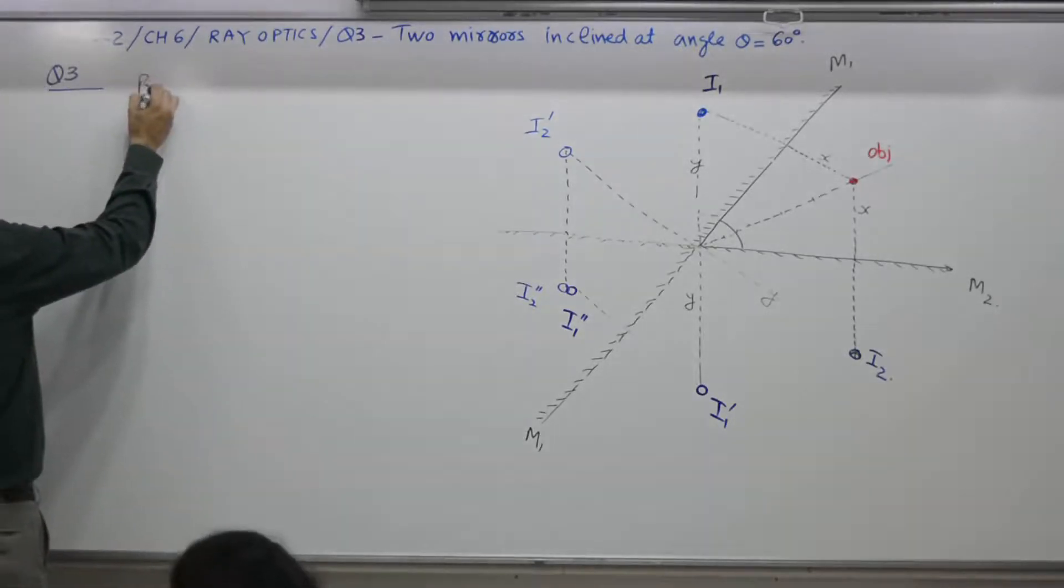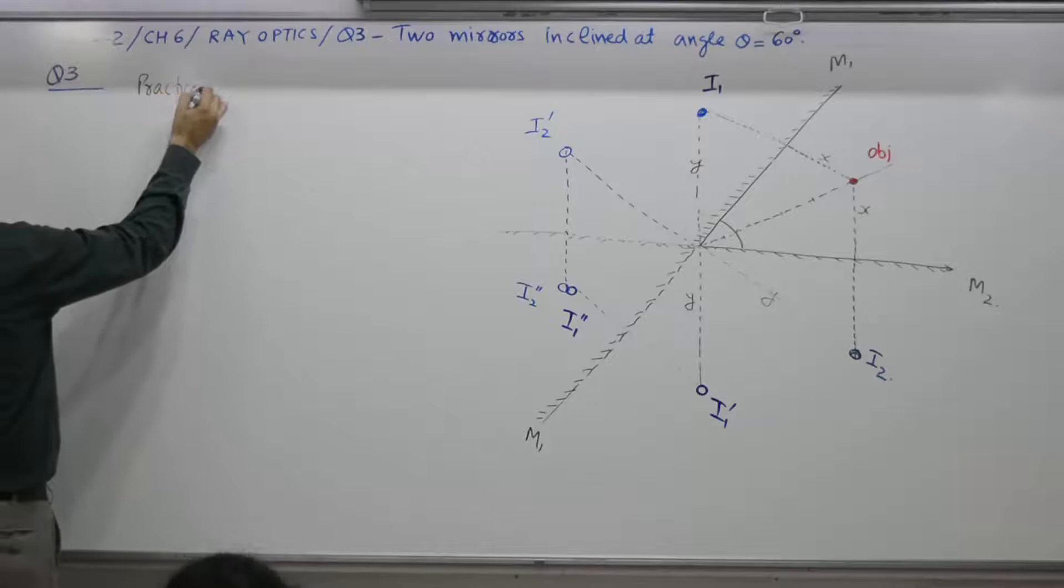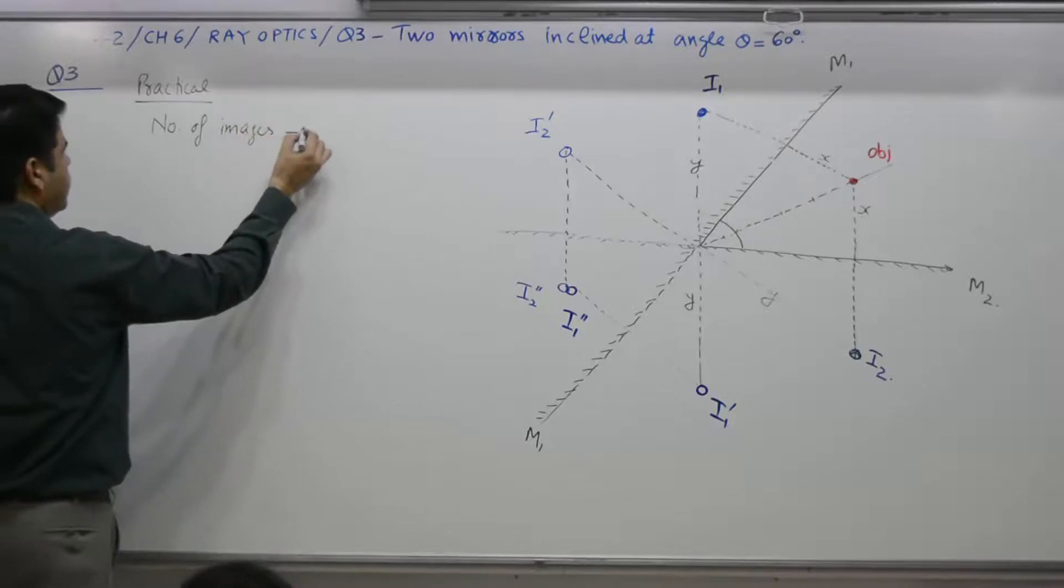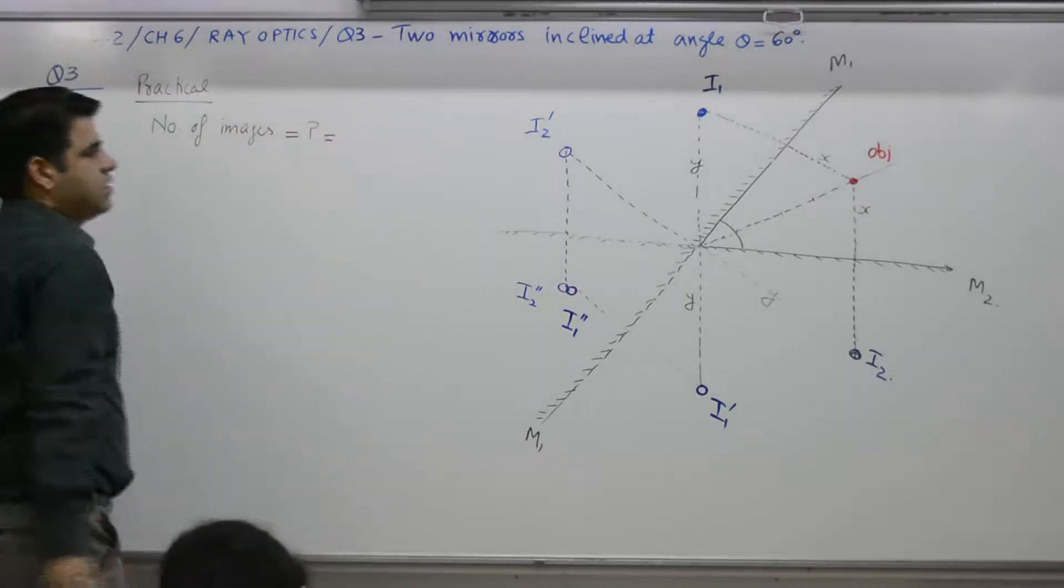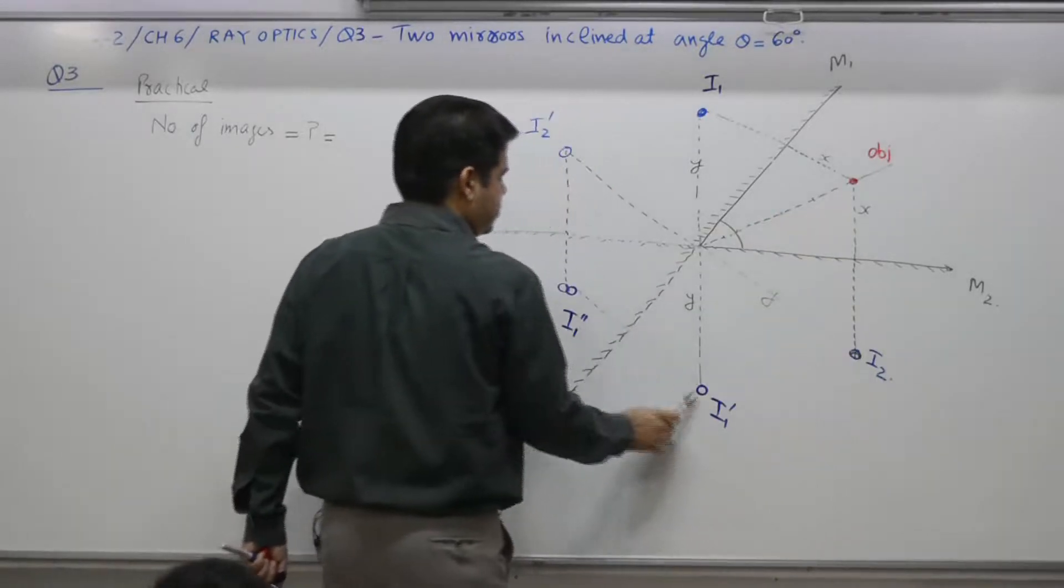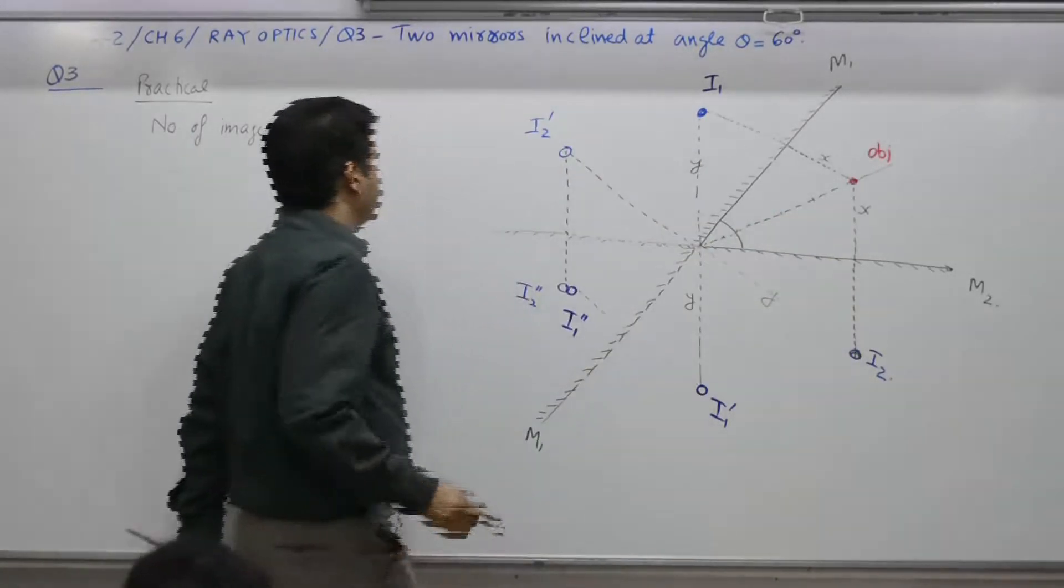Practical. What is your answer? Number of images is equal to what? What? Yes. This is the object. 1, 2, 3, 4, 5. Five.